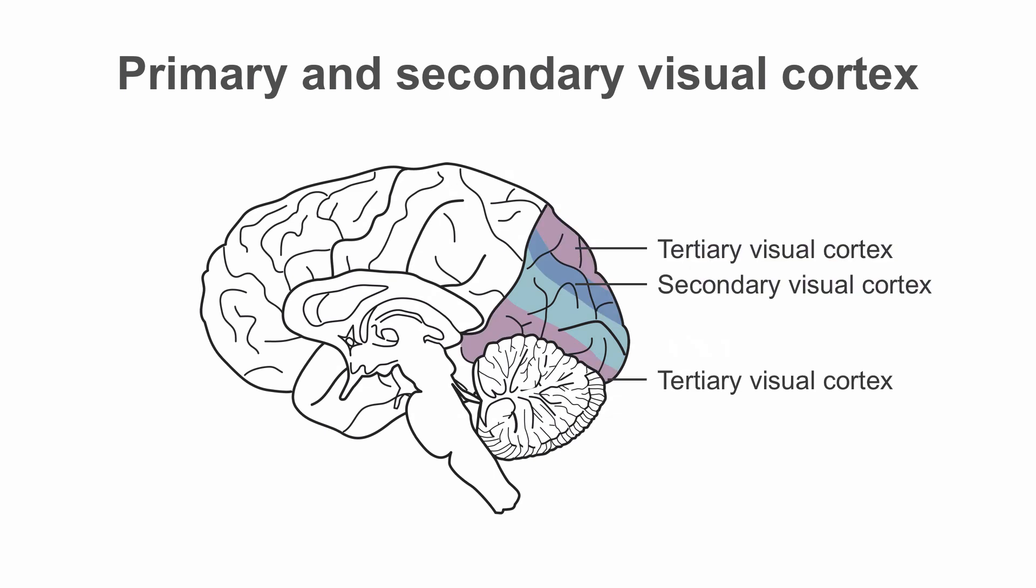The visual association cortex, Brodmann's areas 18 and 19, also known as the secondary and tertiary visual cortices, include the rest of the occipital lobe and the posterior part of the parietal lobe. It is involved in object recognition, perception of color, and other aspects of vision.